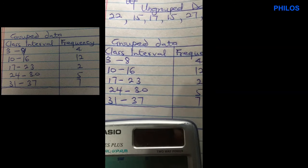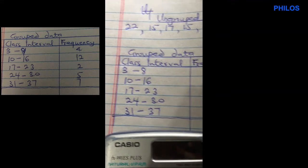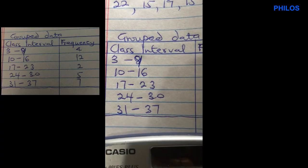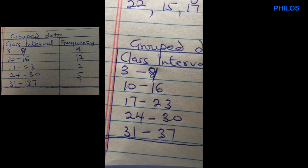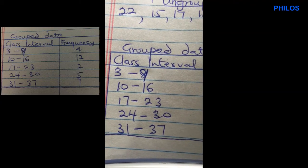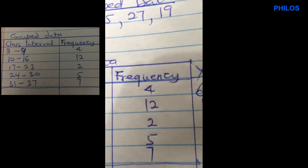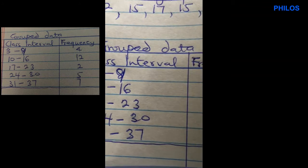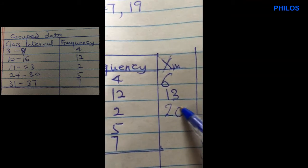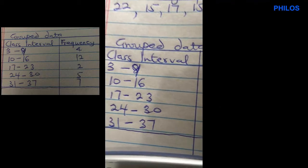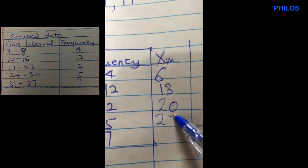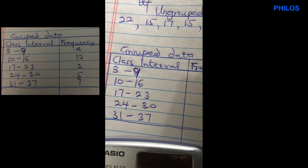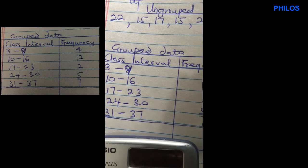So 3 plus 9 divided by 2 gives 6. Then 10 plus 16 is 26 divided by 2 gives 13. Then 17 plus 23 is 40 divided by 2 gives 20. Then 24 plus 30 is 54 divided by 2 gives 27. And the last one, 31 plus 37 is 68 divided by 2 gives 34. So the midpoints are 6, 13, 20, 27, and 34.